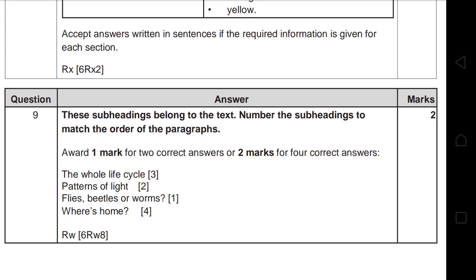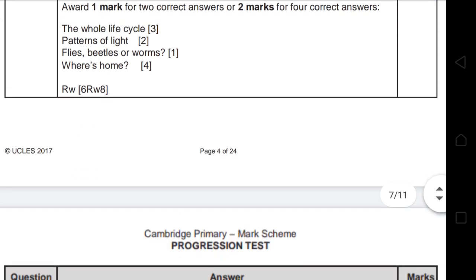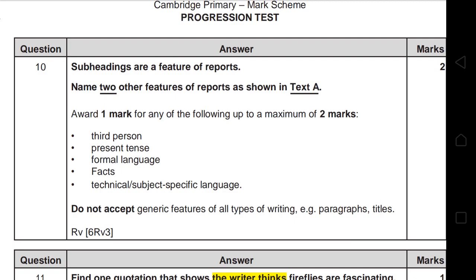Question 9 asks you to number the subheadings to match the order of the paragraphs. The easiest way is to look back at the topic sentence to remember what each paragraph was about. The answers are: 'Whole Life Cycle' is number 3, 'Patterns of Life' is number 2, 'Flies, Beetles, or Worms' is number 1, and 'Where Is Home?' is number 4. You must have all four correct to earn two marks — two wrong answers gives only one mark.